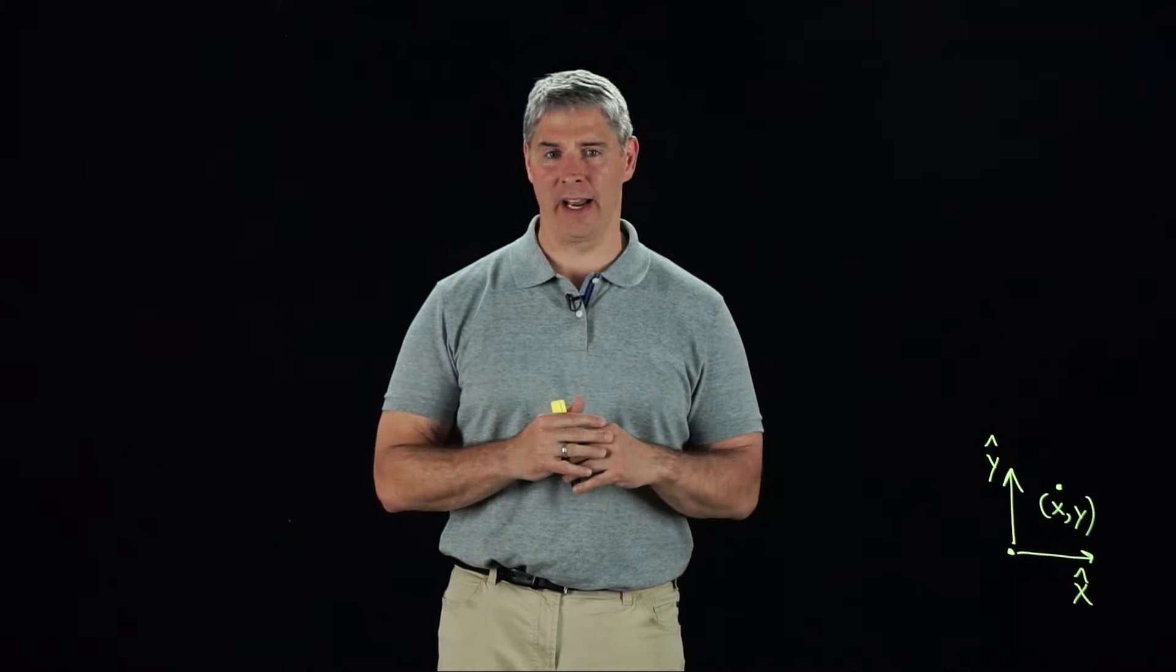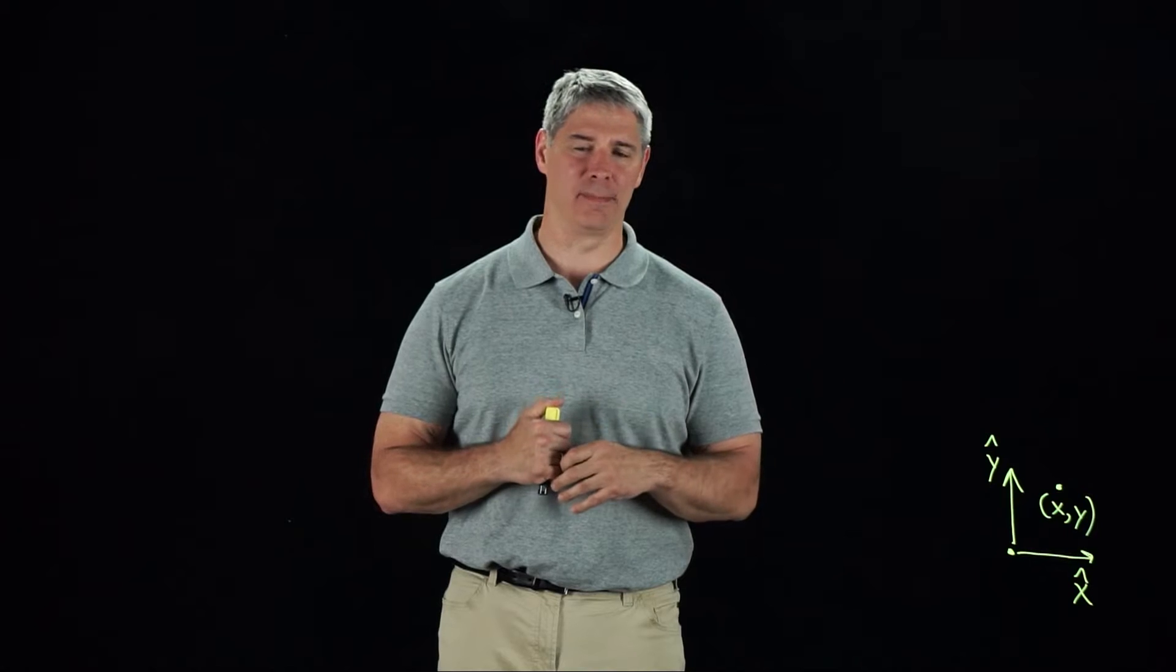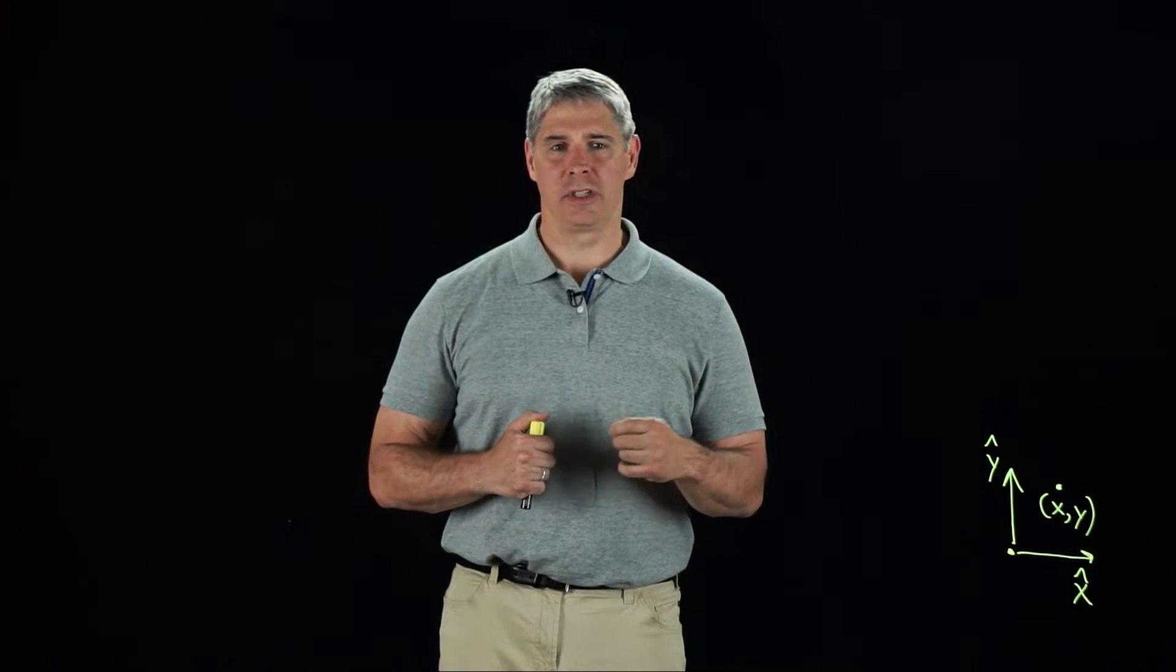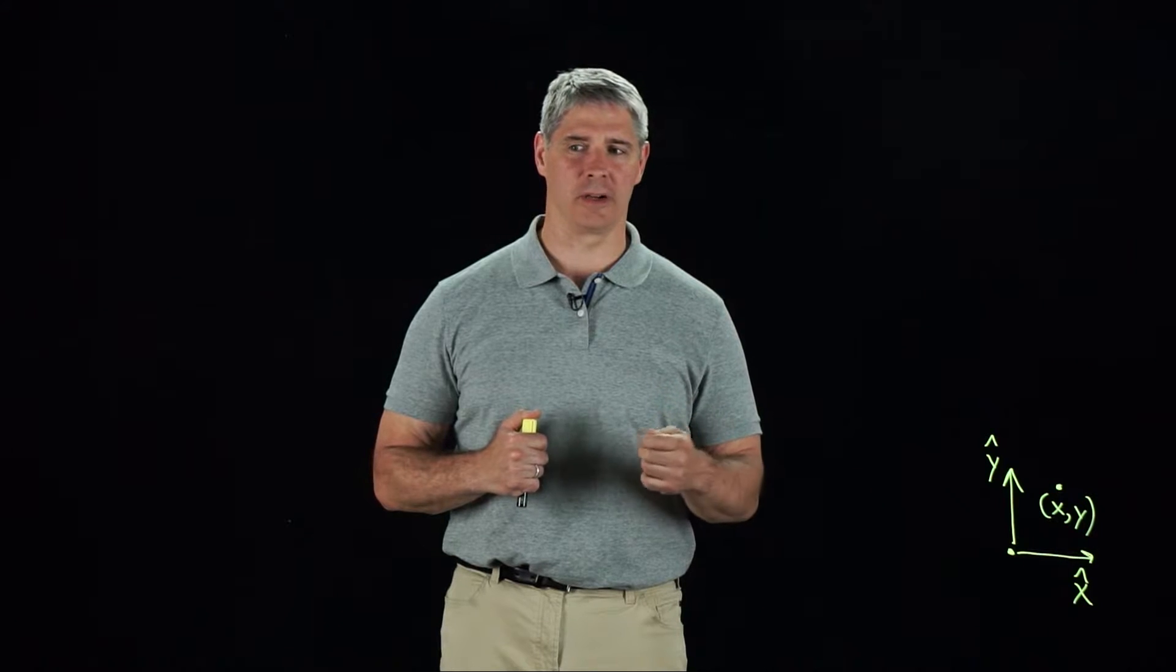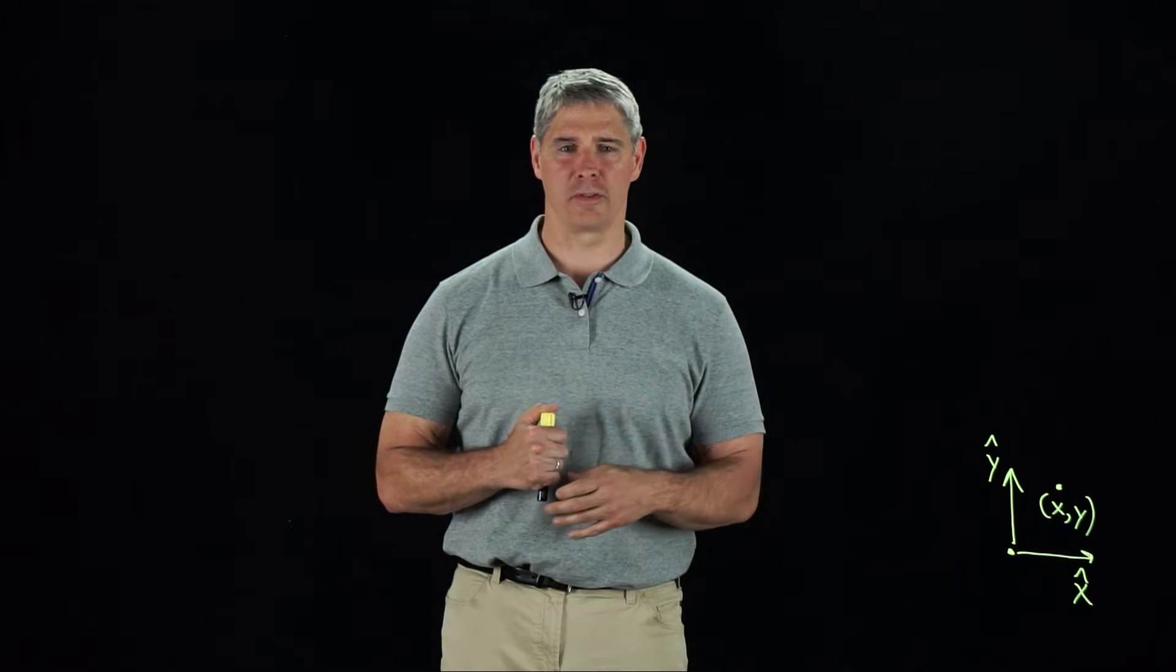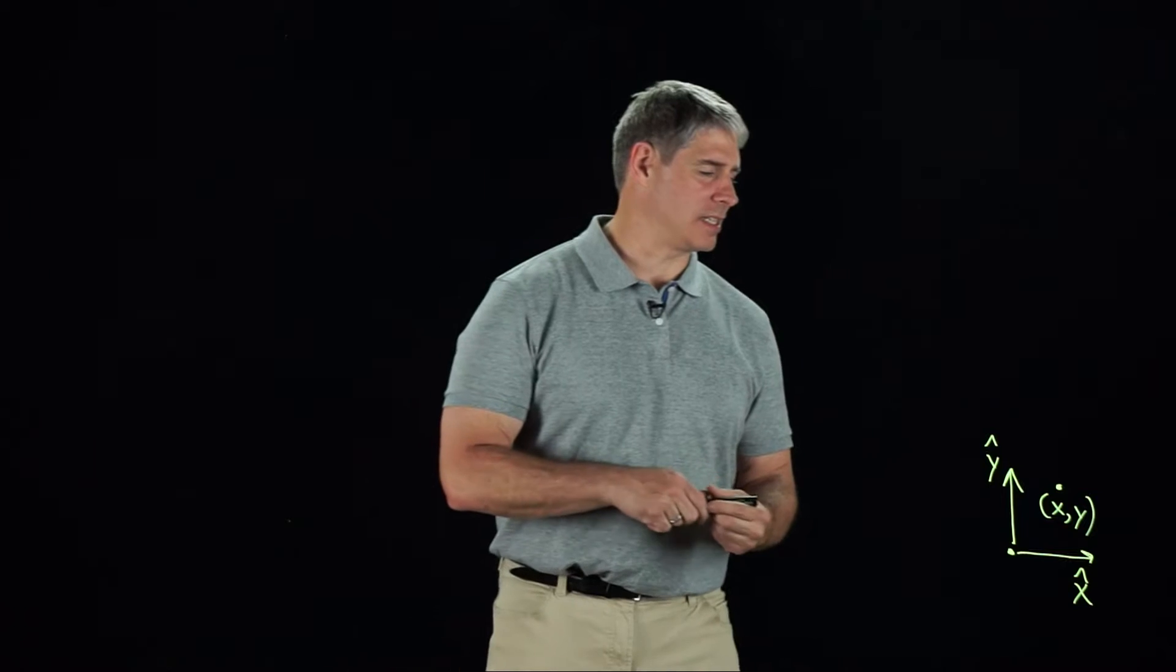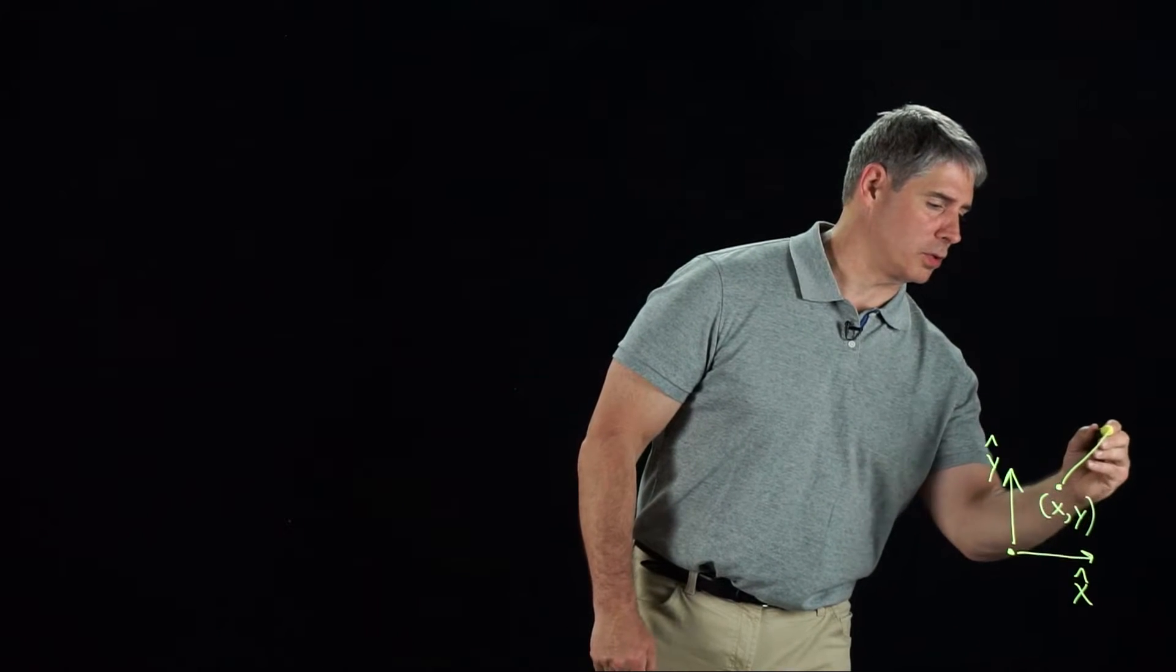If the space is flat, like a line, a plane, or more generally an n-dimensional Euclidean space, we typically choose an origin and coordinate axes and then use coordinates to represent a point. This is what we're most familiar with. A velocity is then just the time derivative of those coordinates.